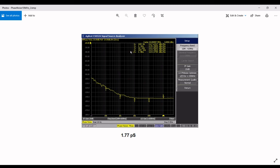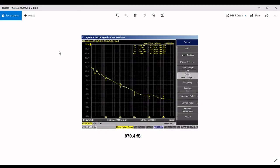This first plot, 10 megahertz, leads to a TIE of 1.77 picoseconds. And this second plot, 200 megahertz, leads to a jitter of 970.4 femtoseconds, less than 1 picosecond. And I must say this is very very good, comparable to the Keysight specifications.